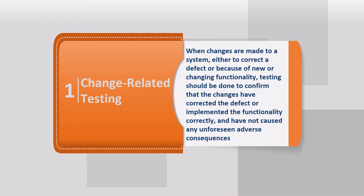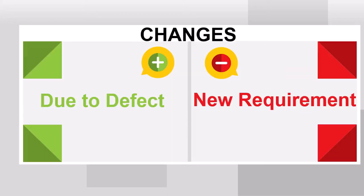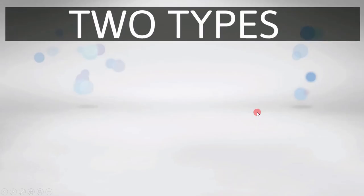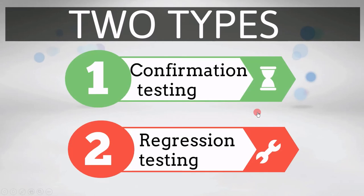In simple terms, understand how changes are introduced in software. There are two ways we can introduce changes to the software: first, due to defects found in the software, or if there is a new requirement for the next release. Change-related testing is of two types.